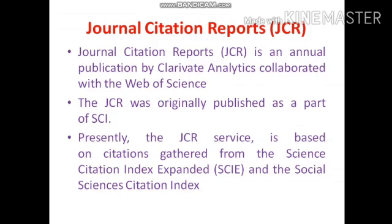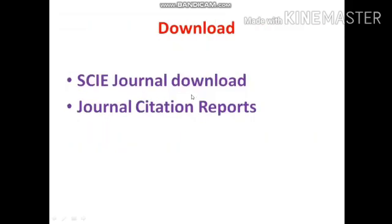Next is the Journal Citation Report (JCR). This is an annual publication by Clarivate Analytics in collaboration with Web of Science. The JCR was originally published as part of SCI; presently the JCR service is based on citations gathered from SCIE (Science Citation Index Expanded) and SSCI (Social Science Citation Index). They take citations from these two indexes, evaluate the impact factor, and publish it every year.